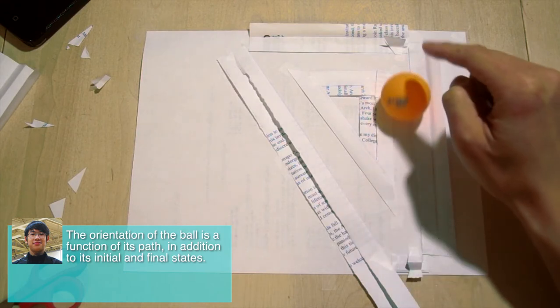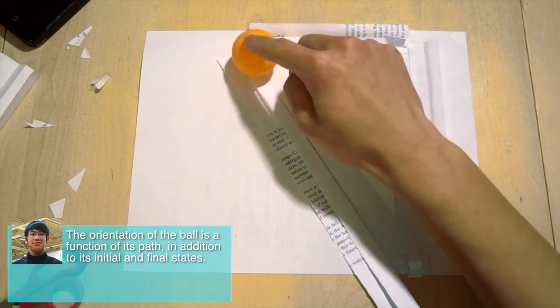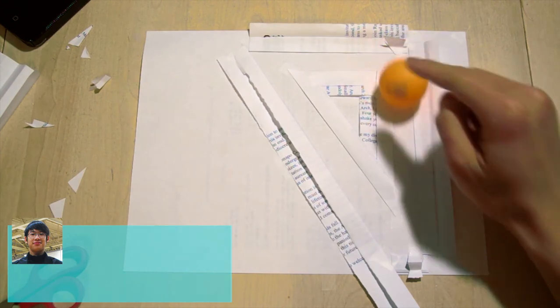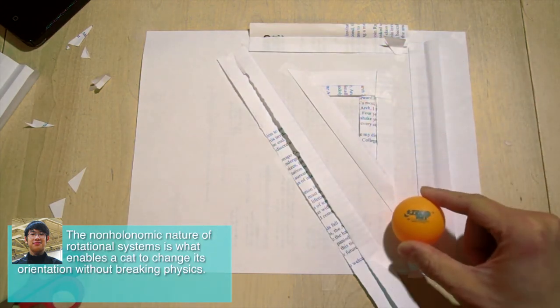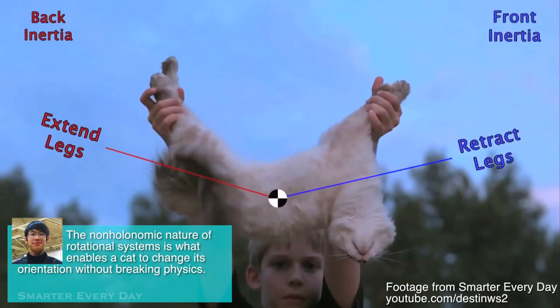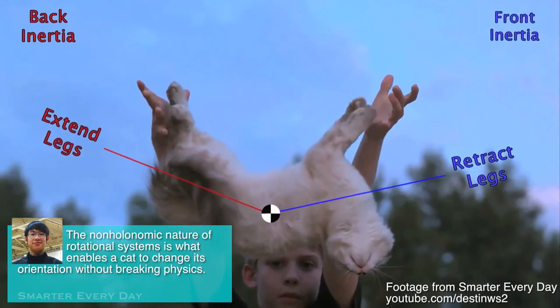The orientation of the ball is a function of its path, in addition to its initial and final states. The non-holonomic nature of rotational systems is what enables a cat to change its orientation without breaking physics.